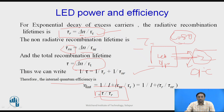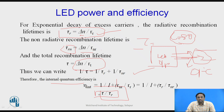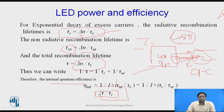LED structures are of several types: planar LED, dome-shaped, surface emitter, edge emitter, and super-luminescent LEDs. The difference between these structures is their light-gathering capability. When using an LED as a source, the maximum number of photons should be coupled into the optical fiber — determined by the total numerical aperture (NA), which is the acceptance angle.